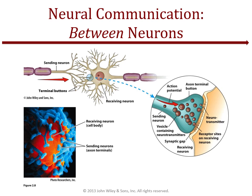Neurotransmitters carry messages from the sending neuron to the receiving neuron. Each neuron receives multiple neurotransmitter messages, which deliver either an excitatory or inhibitory message. The receiving neuron will only produce an action potential and pass along the message if the number of excitatory messages outweighs the inhibitory messages.